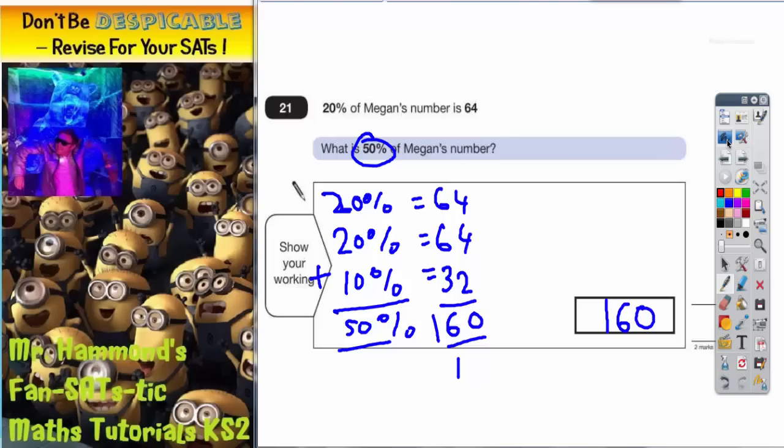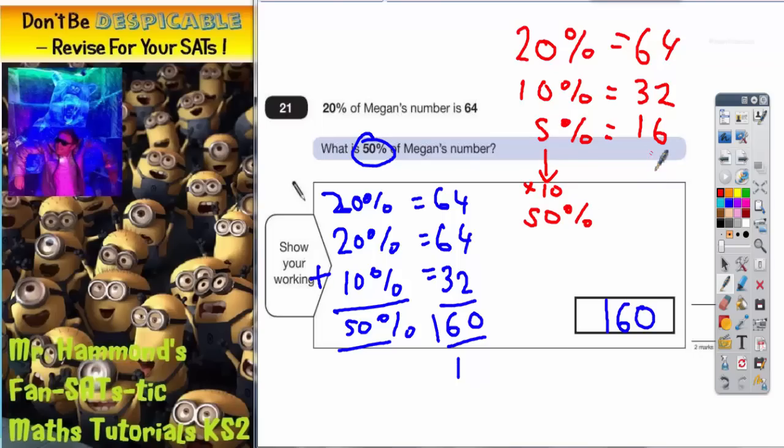Now there is actually a different way we could have done that. We could have said, well, 20% is 64, so from that I could go down to 10% which is 32. From that I could go down to 5% which is going to be halved again, which is 16. And from 5% I could times that by 10. 5% times 10 will give me 50%, so I need to times this by 10, which would give me 160, which is exactly the same answer as what I've got doing it the other way.